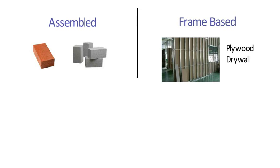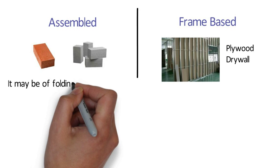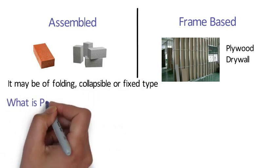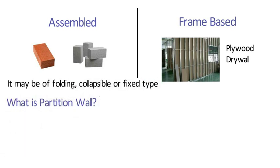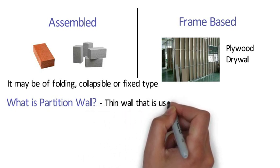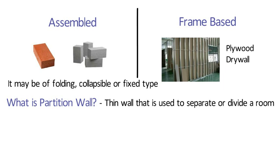Partition walls are designed as non-load bearing walls. They may be of folding, collapsible, or fixed type. A partition wall is a usually thin wall that is used to separate or divide a room. Partition walls in most cases are non-load bearing, which means these walls only need to support themselves and don't need too much strength.